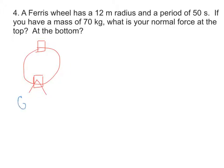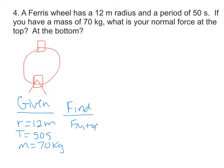Given information: the radius of the Ferris wheel is 12 meters, so r equals 12 meters. Period equals 50 seconds. And your mass equals 70 kilograms. What it's asking for is our normal force, Fn at the top and then Fn at the bottom.